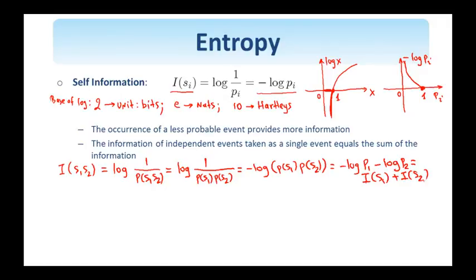In moving away from the information conveyed by a single symbol and in characterizing the whole DMS source, which is completely characterized by its alphabet and the associated symbol probabilities, the entropy of a DMS source is defined as the average information per symbol, as you can see here.